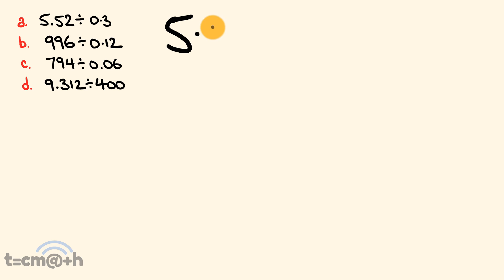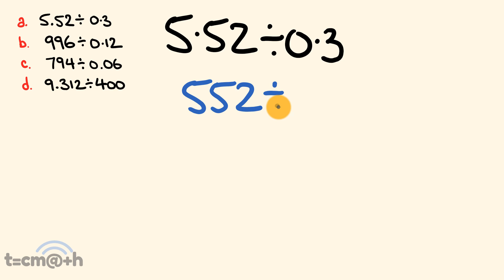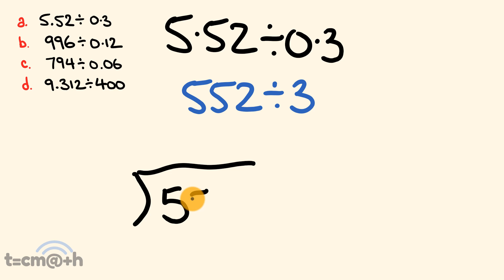We have 5.52 divided by 0.3. Now the first trick to dividing with decimals is we are going to ignore the decimals. We're going to treat these numbers like there were no decimals — we're going to treat 5.52 like 552 and we're going to be dividing that by just 3, and then we'll work out the decimals at the end. So let's work this out: we write it out as 552 divided by 3.